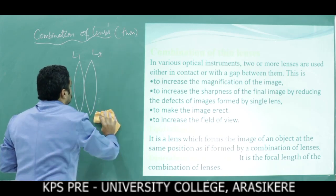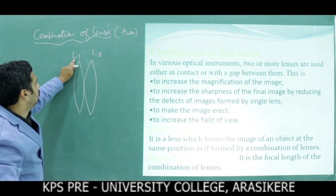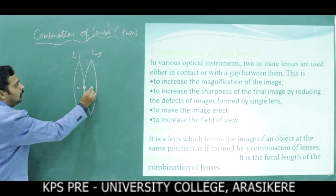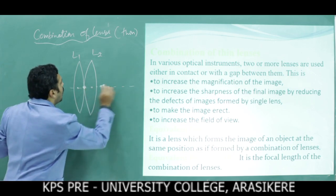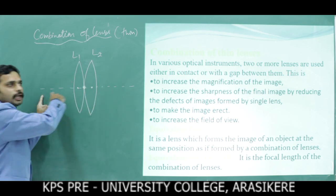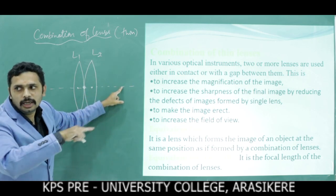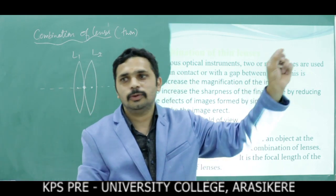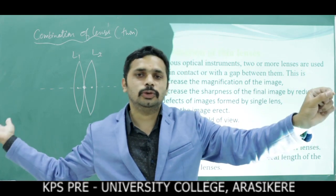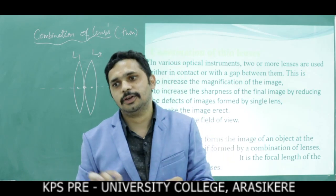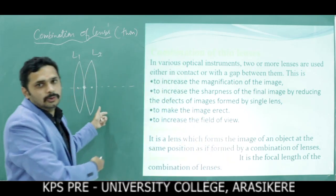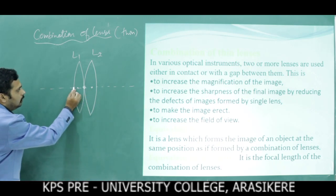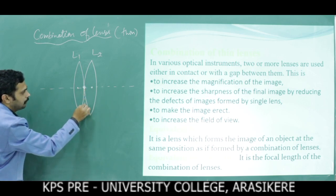Consider two thin lenses L1 and L2. These two thin lenses meet at a common point and have a common principal axis. For the derivation, I am using a point object. If you use a point object, you get a point image — similarly as used in the lens maker's formula. All distances are measured from the optic center, but here the two thin lenses meet at one point.